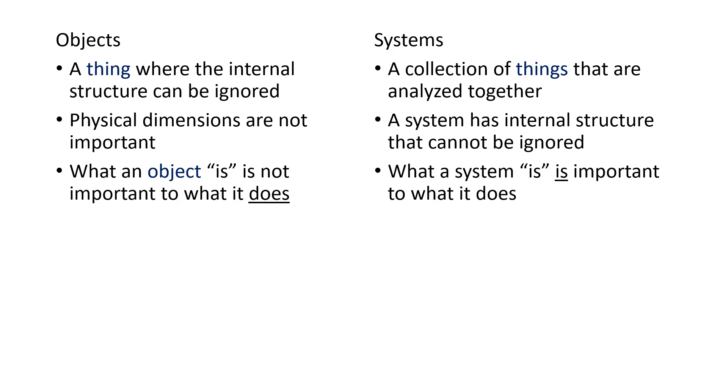Before we jump into the idea of center of mass, let's briefly talk about the difference between an object and a system. An object is a thing where the internal structure can be ignored. You don't care what it's made out of, you don't care how the atoms within it are arranged, you just care what the exterior looks like. Physical dimensions are not important, and what the object is isn't important to what it does.